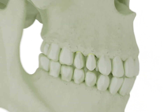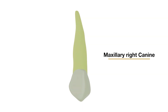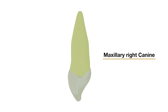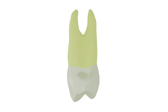The premolars are so named because they are anterior to the molars in the permanent dentition. The maxillary premolars are developed from the same number of lobes as the anterior teeth, that is four. The primary difference in development is the well-formed lingual cusp developed from the lingual lobe, which is represented by the cingulum development on incisors and canine. This also results in the movement of the marginal ridges in a more horizontal plane, and they are considered part of the occlusal surface of the crown rather than part of the lingual surface.